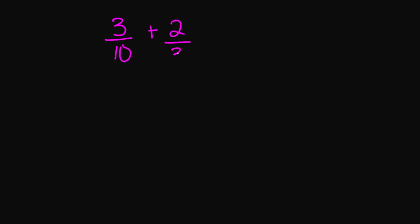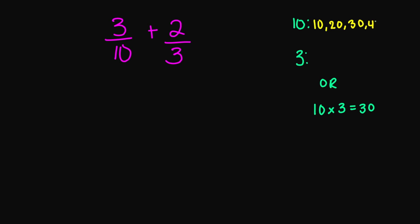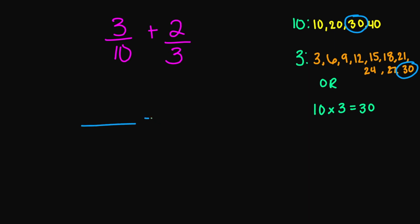Let's try 3 over 10 plus 2 over 3. Notice here my denominators are not the same, so I do need to find the common denominator. You can multiply 10 times 3, which gives you 30. Let's look at the multiples of 10: 10, 20, 30, 40. And for my 3: 3, 6, 9, 12, 15, 18, 21, 24, 27, 30. So 30 is our common multiple — we need to have 30 in our denominator.